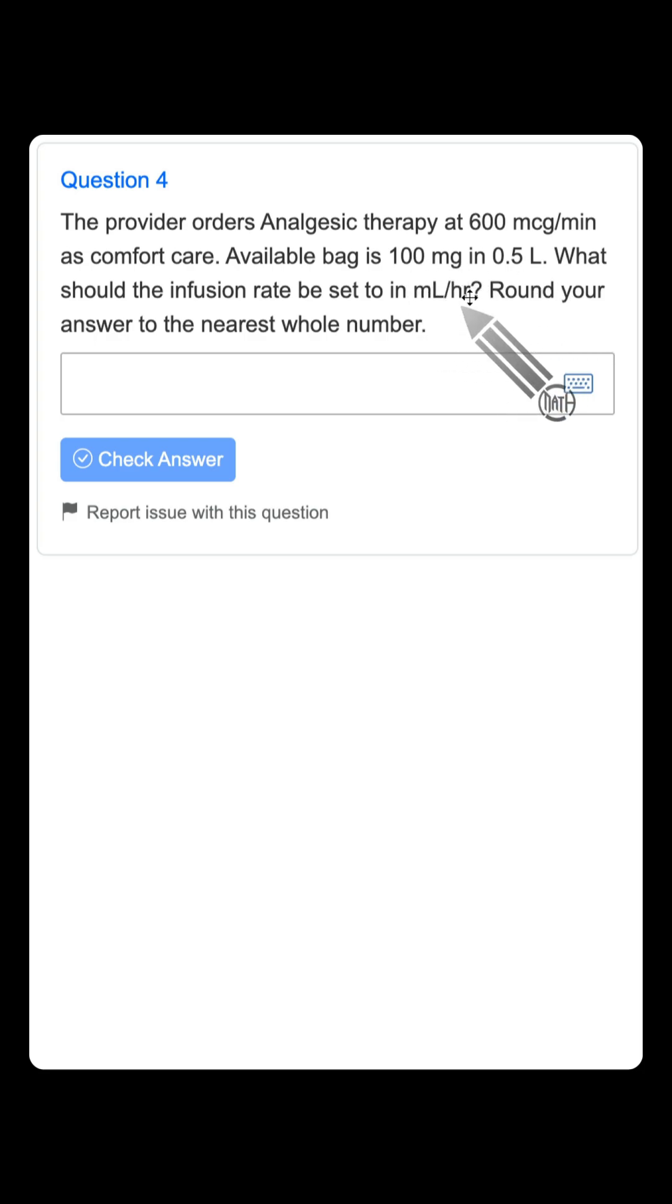Now, our goal here is to find how many milliliters per hour. Milliliters is that top word, so I want to start with milliliters at the top of my first fraction. Notice milliliters is not mentioned anywhere in our problem. Sure, it mentions 0.5 liters. Maybe you know that's 500 milliliters.